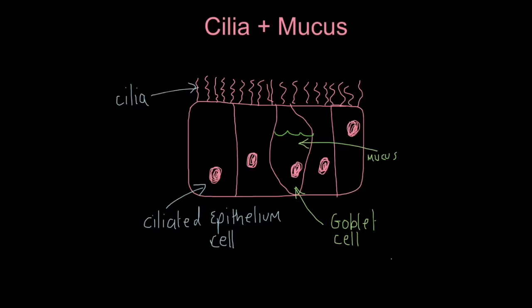Finally, in the lining of our respiratory tract, we have two types of cells which work together to help clear infection. Firstly, we have ciliated epithelium cells. You can see these cells here, which have tiny hair-like extensions called cilia. We also have goblet cells, which hold mucus. So this green stuff is mucus.